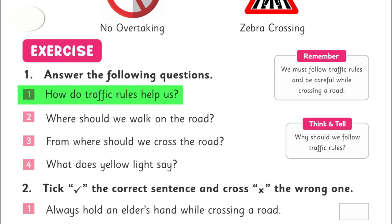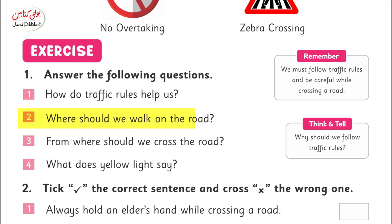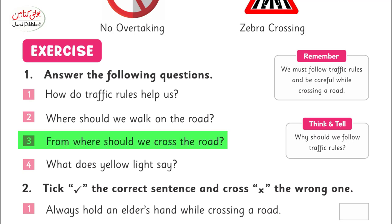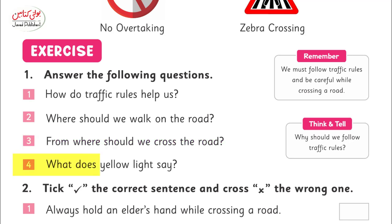Exercise: How do traffic rules help us? Traffic rules help us to avoid accidents. Where should we walk on the road? Always walk on the footpath. From where should we cross the road? We should cross the road at the zebra crossing. What does the yellow light say? The yellow light says: get ready to move.